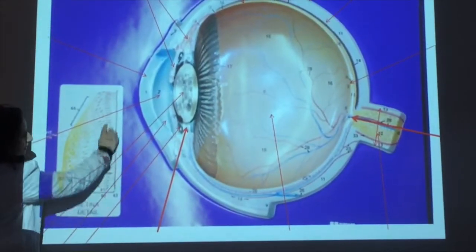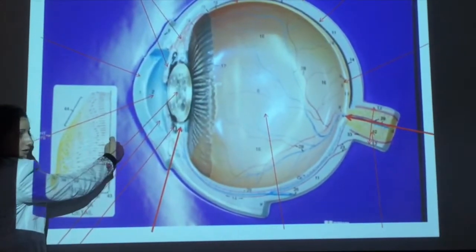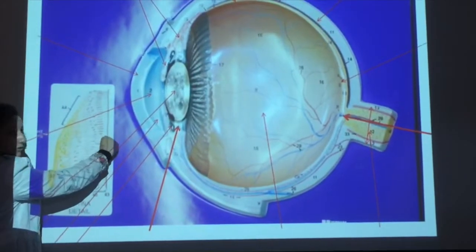These are the rods and cones. If it looks rectangular, it's a rod. If it looks like an ice cream cone, it's a cone.